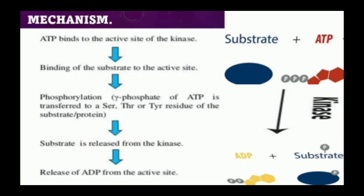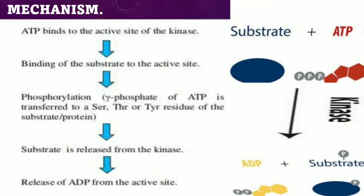Protein kinases regulate the biological activity of proteins by phosphorylation of specific amino acids with ATP as the source of phosphate, inducing a conformational change from an inactive to an active form of the protein. Firstly, ATP binds to the active site of the kinase, which leads to increased binding of the substrate to the active site. That leads to phosphorylation — the gamma phosphate of ATP is transferred to the serine, threonine, or tyrosine residues of the substrate. Then the substrate is released from the kinase, followed by the release of ADP from the active site.